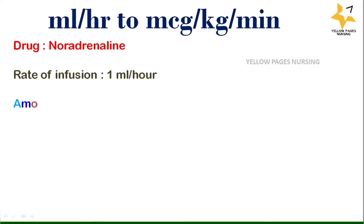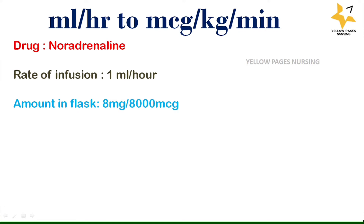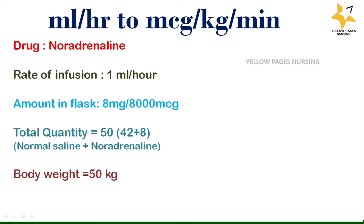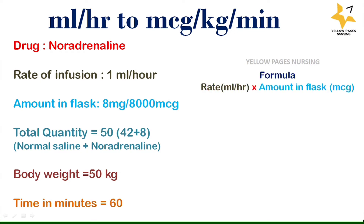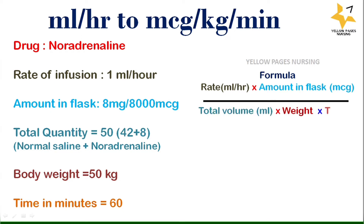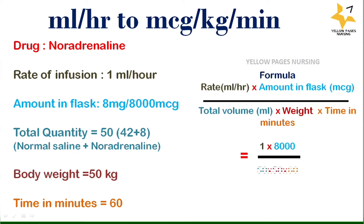In the second example, rate of infusion is 1 ml per hour, amount in flask is 8 mg — that is double strength — which converts to 8,000 micrograms. Total volume is 50 ml (42 ml normal saline plus 8 ml noradrenaline), body weight 50 kg, time in minutes is 60. Applying all values into the formula, we again get 0.05 micrograms per kg per minute.